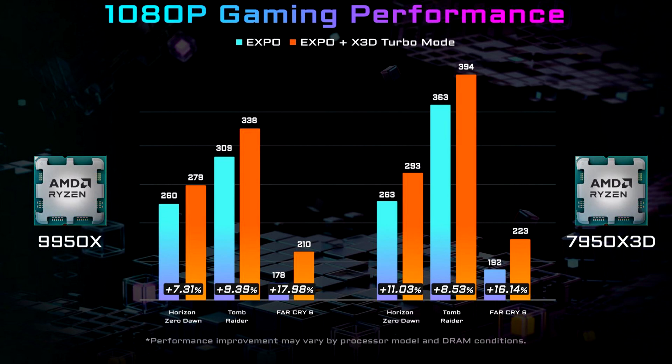Gigabyte previously showcased performance numbers with X3D Turbo Mode activated, and according to their own tests, the AMD Ryzen 7 9800X3D was able to achieve a 3-5% performance boost in a few games. The previous gen Ryzen 7 7950X3D, as well as the latest gen Ryzen 9 9950X, did better as they both have dual CCDs, one of which gets disabled in X3D Turbo Mode, which drastically affects gaming performance.